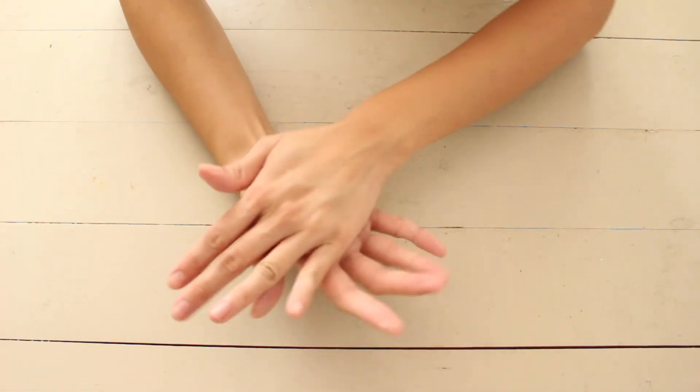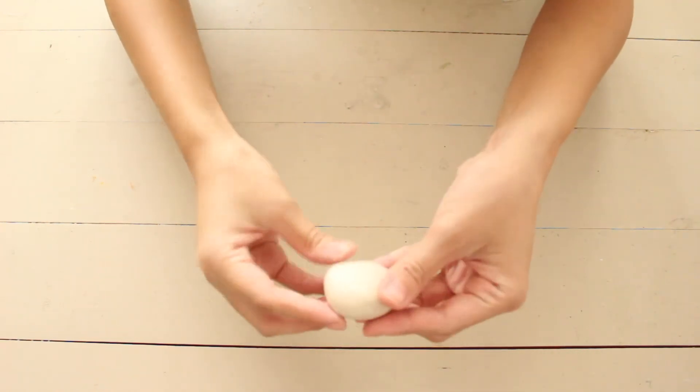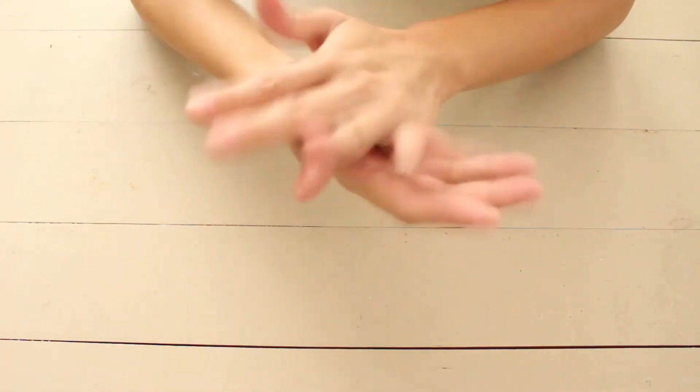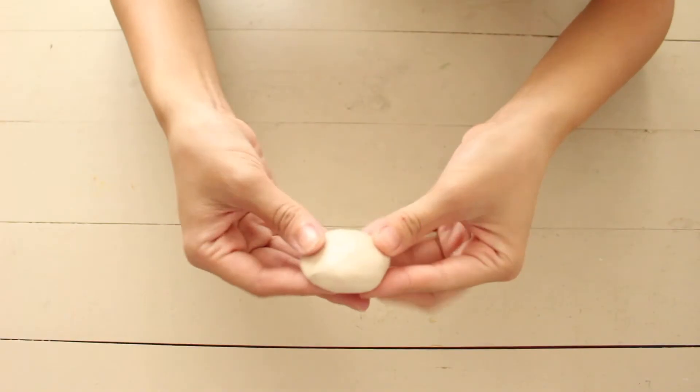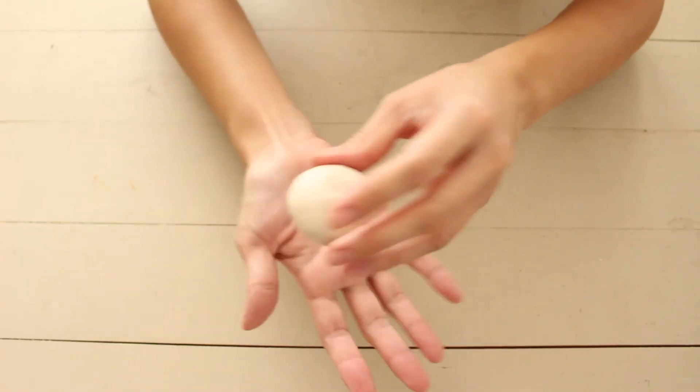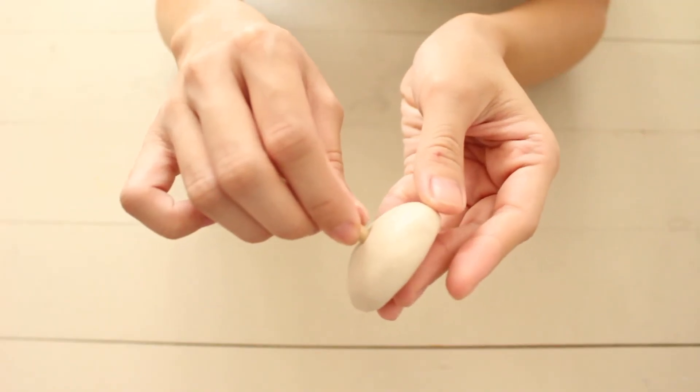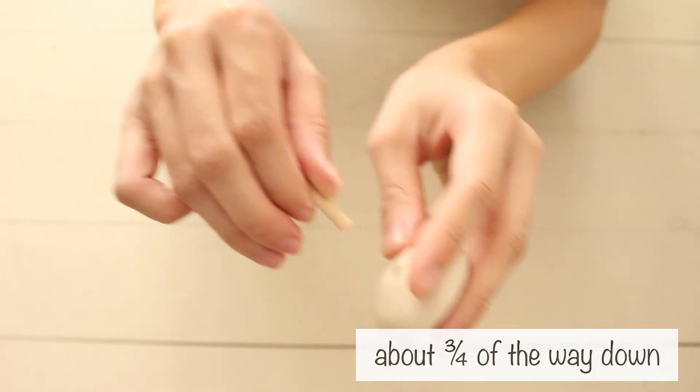For the base, I formed a ball out of clay and flattened the bottom to create a dome. It doesn't have to be symmetrical since it'll act as snow. I pressed an extra piece of dowel in the center of each base.